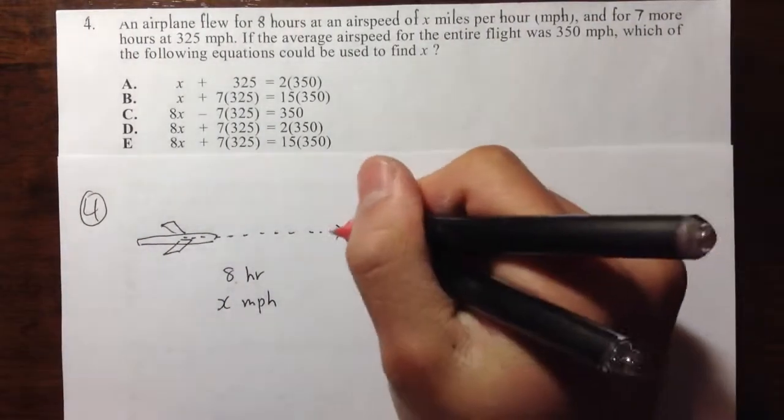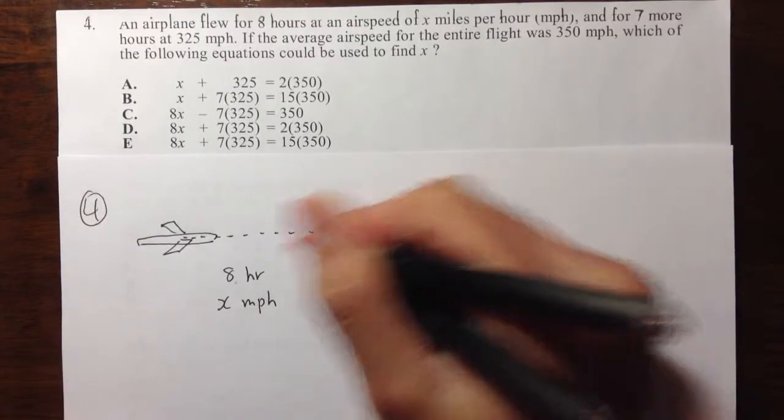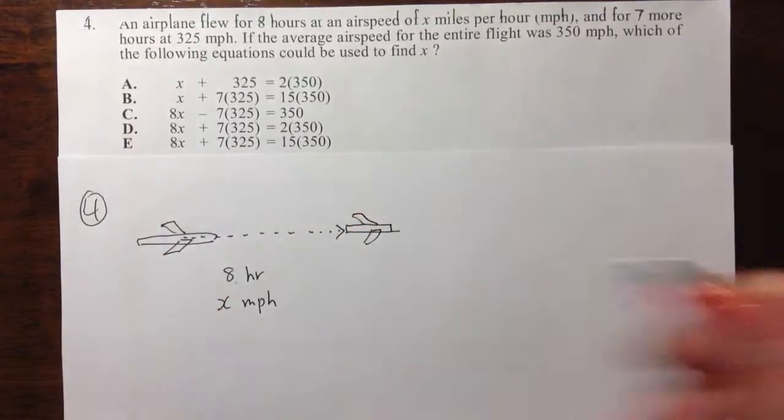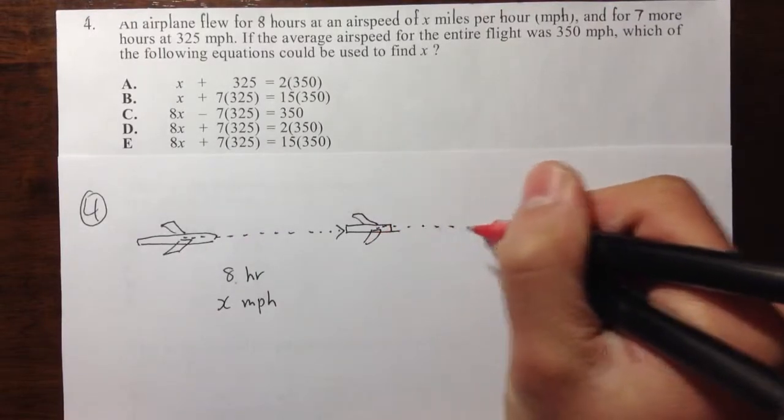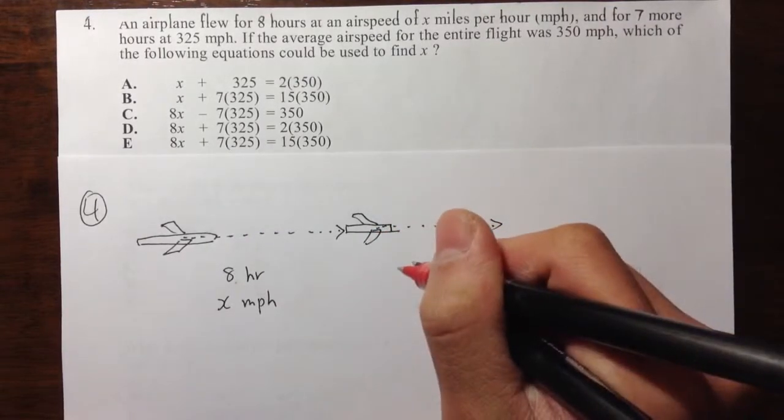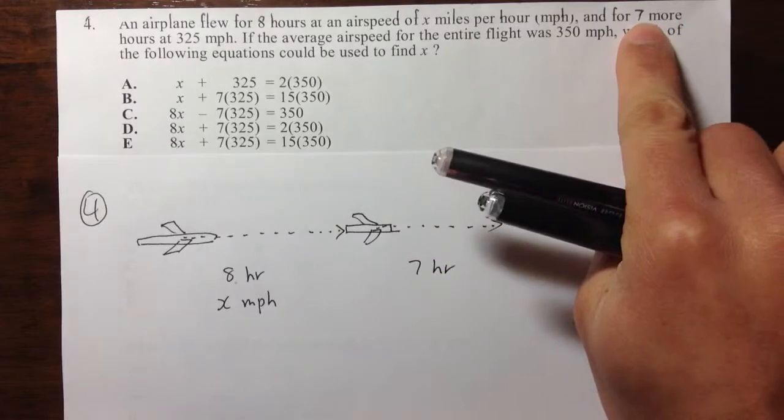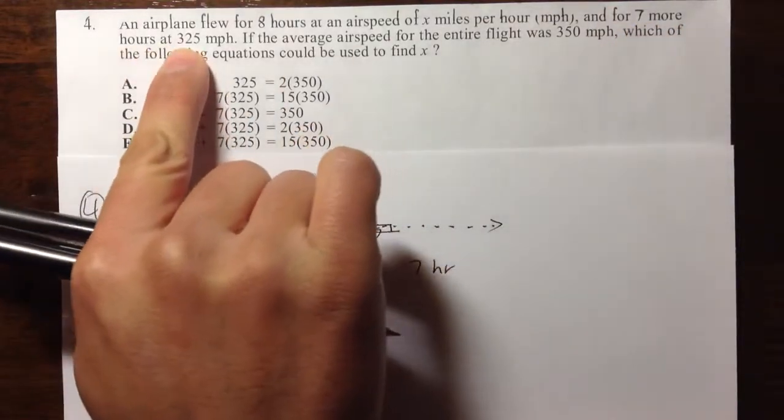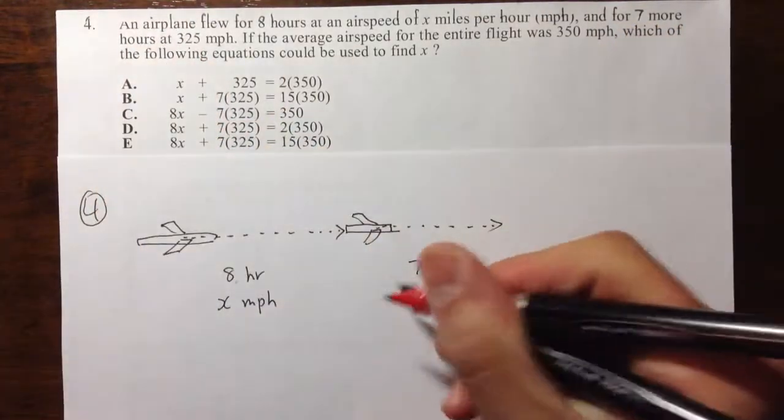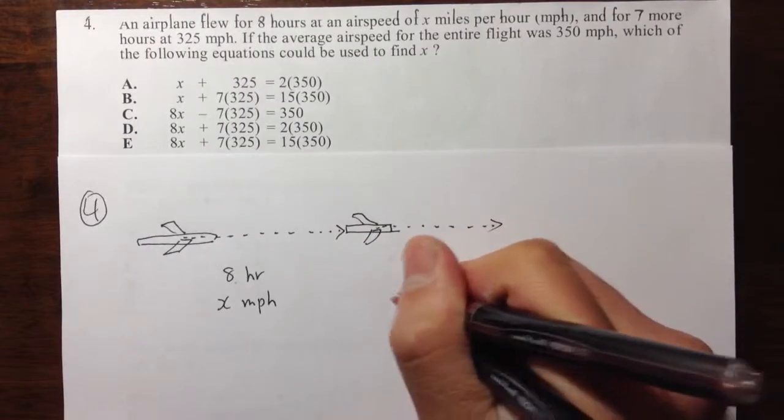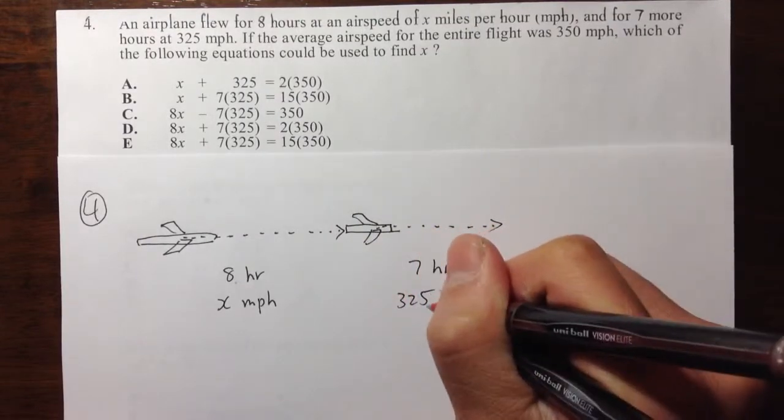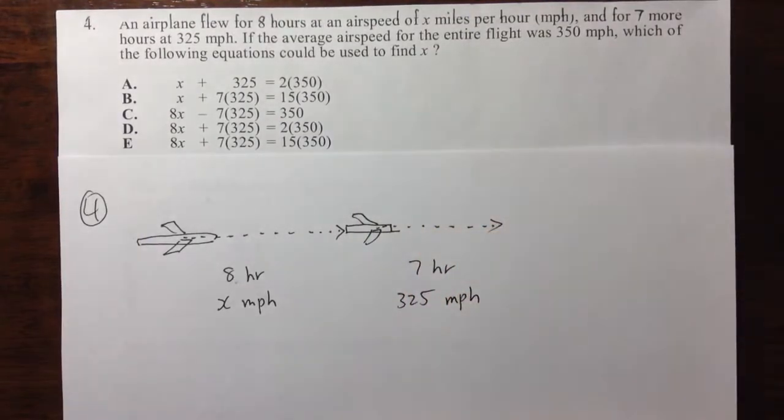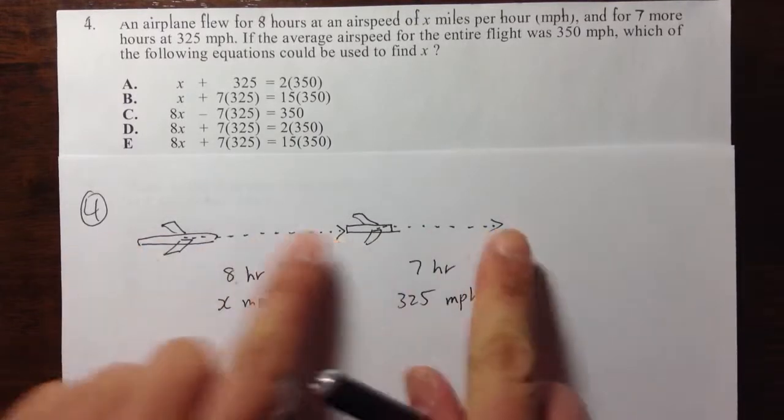This is just the first part of the trip. And then the second part, another picture of the airplane. So the second part, it says that we have 7 hours, 7 more hours at a speed of 325. So in this case, this part, we know it's 325 miles per hour. So this is the first part, and that's the second part.